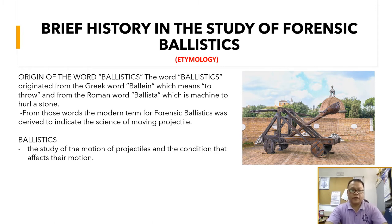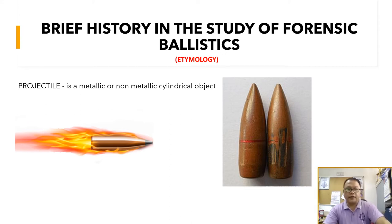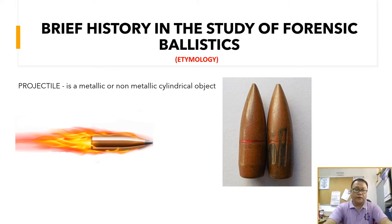So it is the study of motion — about the movement of projectiles. A projectile is a metallic or non-metallic cylindrical object. It is one part of the cartridge. Always remember that there are four parts of a cartridge: we have the bullet, the fired cartridge case, the gunpowder, and the primer.